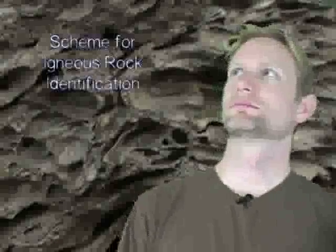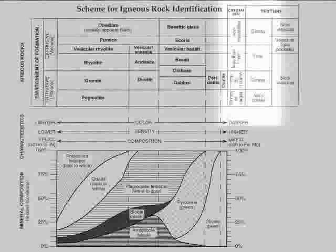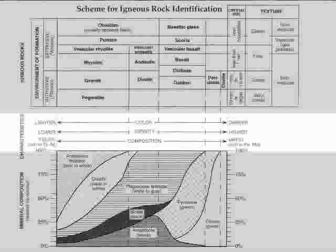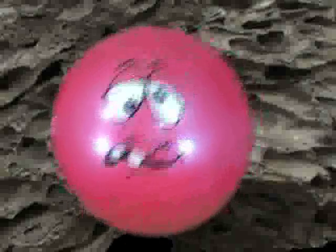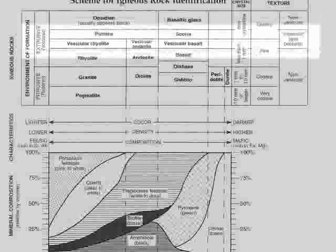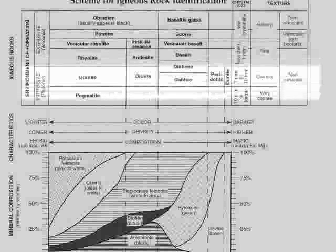The Earth Science Reference Table has an excellent table for identifying igneous rock called the ESRT for Igneous Rock Identification. The rocks are sorted by grain or crystal size on the vertical axis, and color, density, and composition on the horizontal axis. As you go lower on the table, the crystals get bigger.